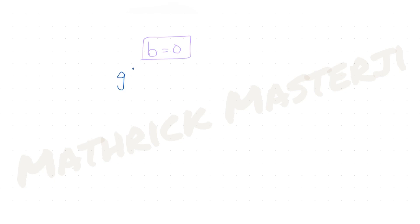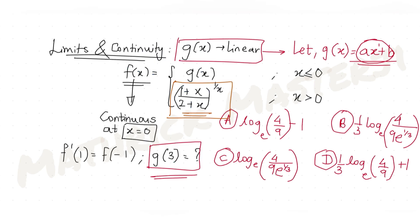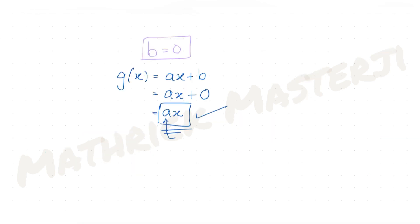With b = 0, g(x) = ax + 0 = ax. Now let's use the second condition: f'(1) = f(-1). For x = -1 (which is less than 0), f(-1) = g(-1) = a(-1) = -a. So f(-1) = -a.